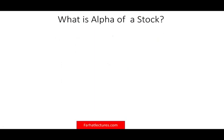So what is the alpha of a stock? Well, simply put, it's the difference between the expected return, the stock expected return, and its return per the security market line, or simply put, following the CAPM formula, which is the capital asset pricing model.